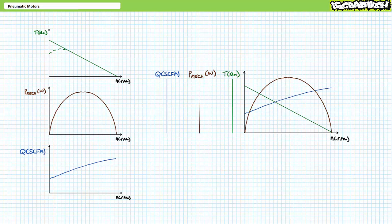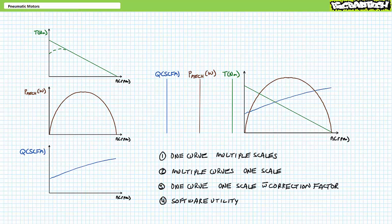We can use this type of chart to determine the motor's operating point—a condition with a known speed, torque, flow rate, and mechanical power. But what about pressure? There are several ways air motor manufacturers account for load-induced pressure, a majority of which are awful and bordering on the unworkable. Method one uses one curve and multiple scales. Method two uses one scale and multiple curves. Method three uses one curve, one scale, and a correction factor table. And lastly, method four uses the internet or manufacturer computer application.